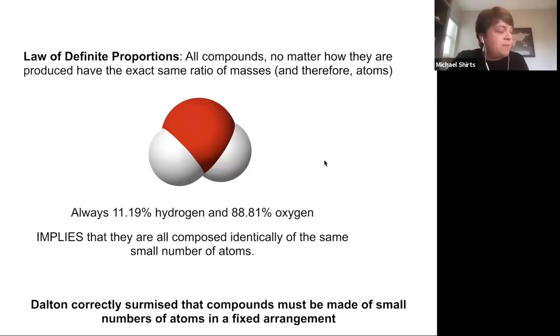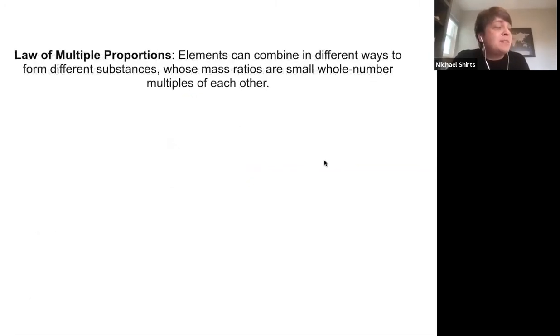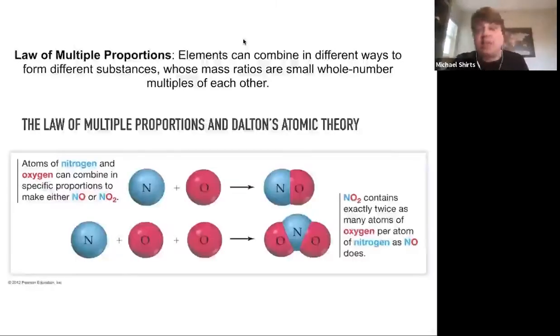So Dalton correctly surmised that the compounds must be of small numbers of atoms in a fixed arrangement from this and from also the law of multiple proportions that elements can combine in different ways to form different substances whose mass ratios are small whole number multiples of each other. After you study enough compounds, you discover that the mass ratios are constant multiples. And that those multiples are essentially multiples of single units that allows you to figure out things like nitric oxide NO, and then nitrous oxide actually has exactly twice as much oxygen.